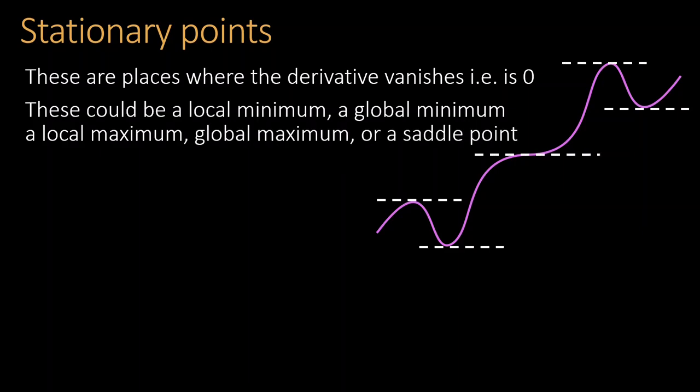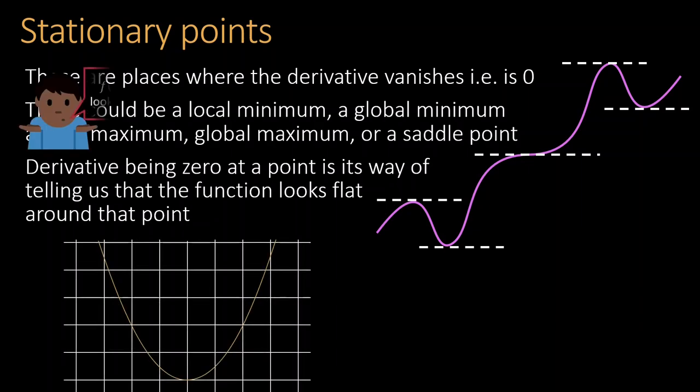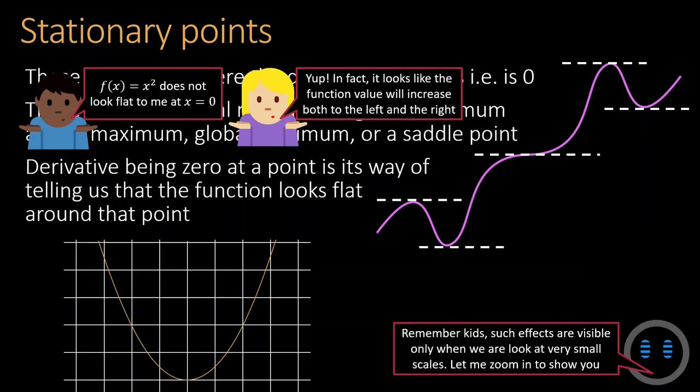A term that invokes anxiety in most machine learning enthusiasts. The derivative being zero at a point indicates that a function is flat in that region. However, we might find ourselves disagreeing with the statement when we visually inspect functions. The problem here is the scale. Calculus effects are often visible only at a very small scale, for which we will have to enter the quantum realm.